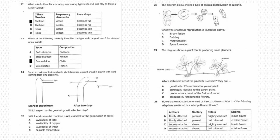Twenty-four: In an experiment to investigate phototropism, a plant shoot is grown with light coming from one side only. Which region has the greatest growth after two days? The answer is D. Twenty-five: Which environmental condition is not essential for the germination of seeds? Answer is A, availability of light. Twenty-six: The diagram below shows a type of asexual reproduction in bacteria. What type of asexual reproduction is illustrated above? The answer is A, binary fission. Twenty-seven: The diagram shows a plant that is producing small plantlets. Which statement about the plantlets is correct? The answer is B, they are genetically identical to the parent plant.